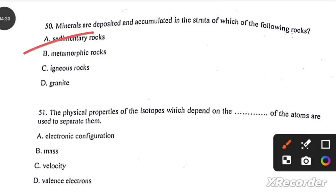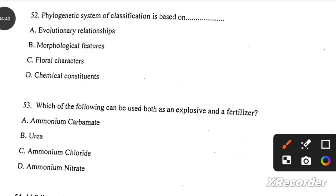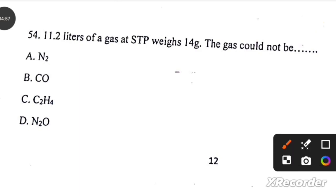The physical properties of the isotopes which depend on the mass of the atoms are used to separate them. Phylogenetic system of classification is based on evolutionary relationships. Which of the following can be used as both an explosive and a fertilizer? Ammonium nitrate. 11.2 liters of gas at STP weighs 14 grams. This gas could not be C2H4.